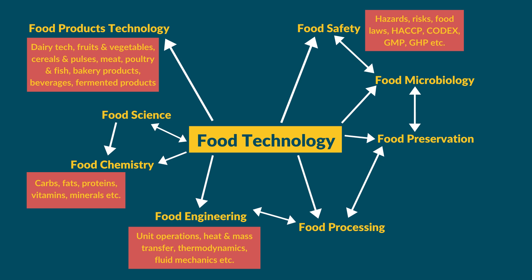Under food preservation, you study different methods such as cold preservation methods and heat treatment methods. One commonly used example is pasteurization — essentially heating milk for a certain period of time at a certain temperature. There are different preservation and processing methods used to extend the shelf life of a food product. You will also study food additives — natural or synthetic components added to food products to extend shelf life, which can be considered modifiers of shelf life.